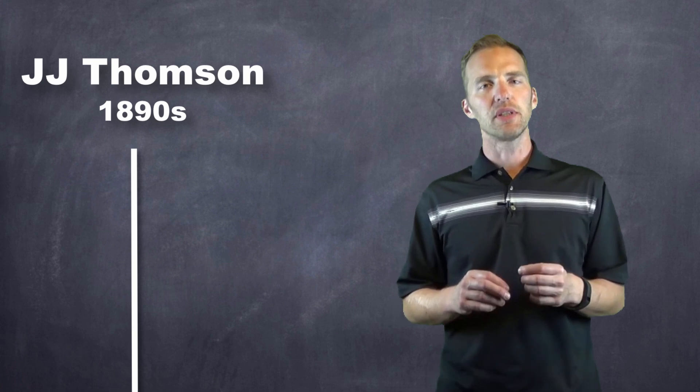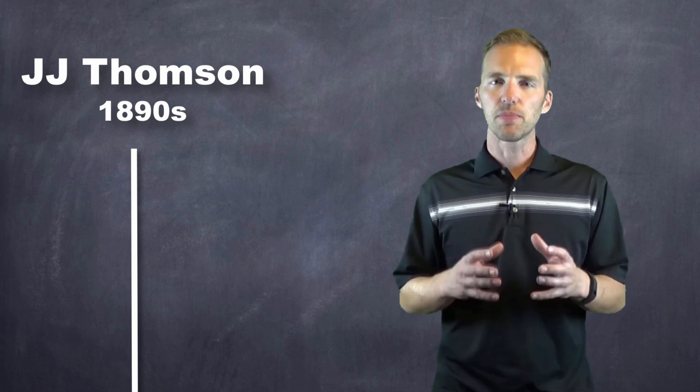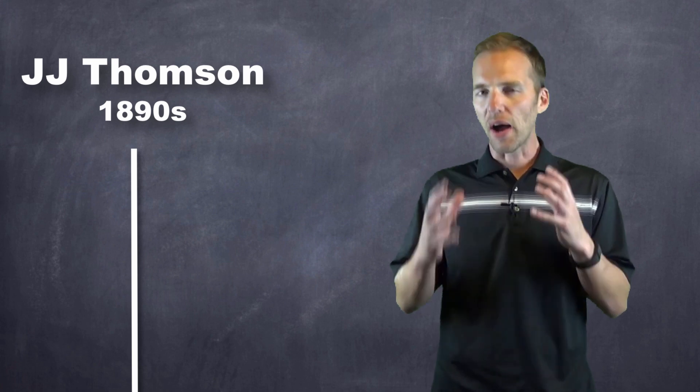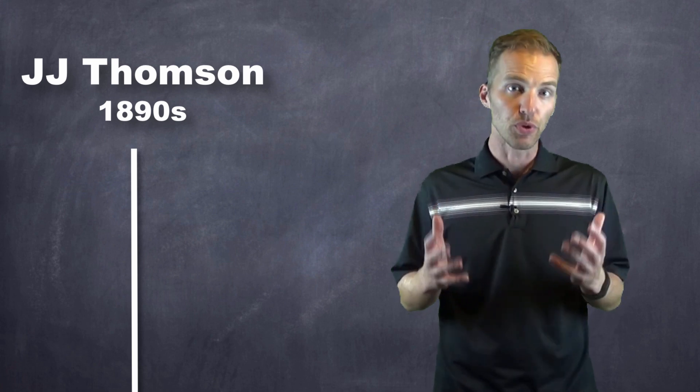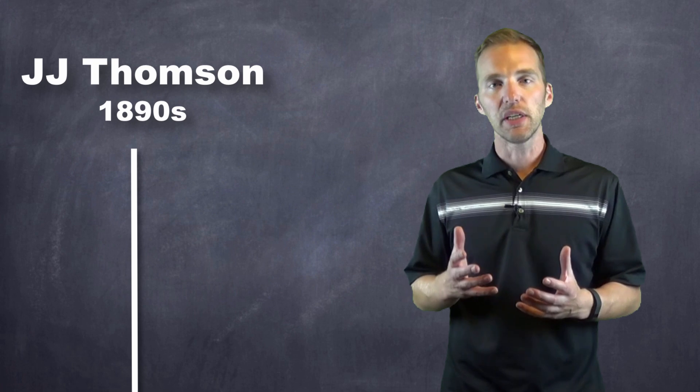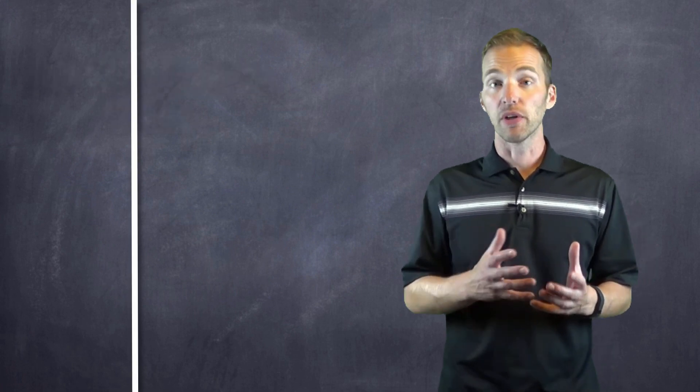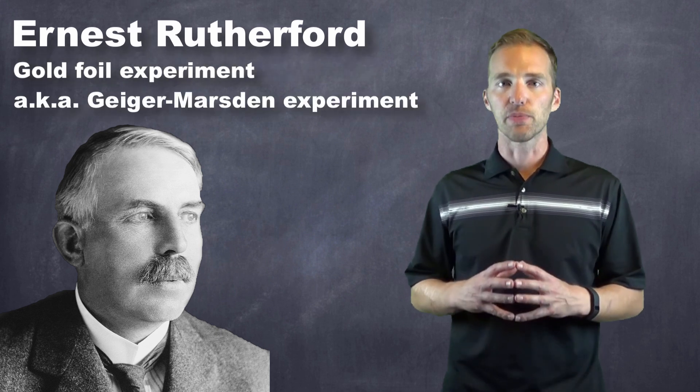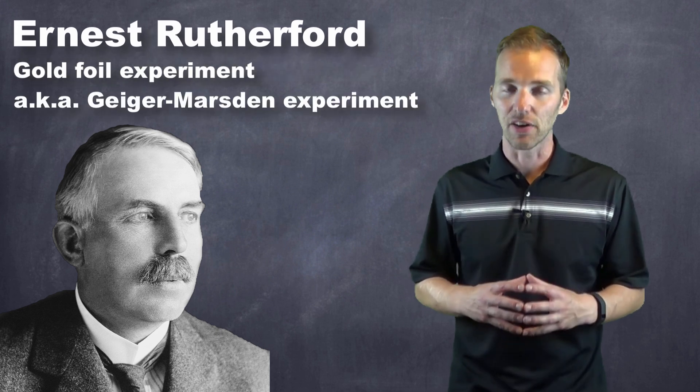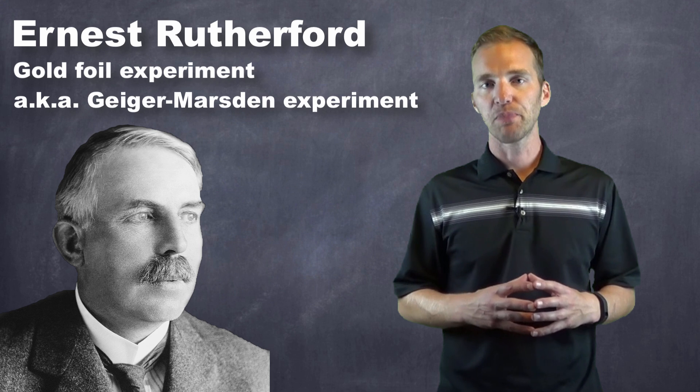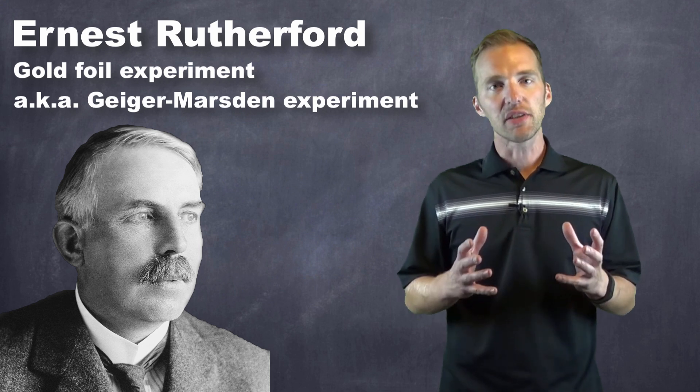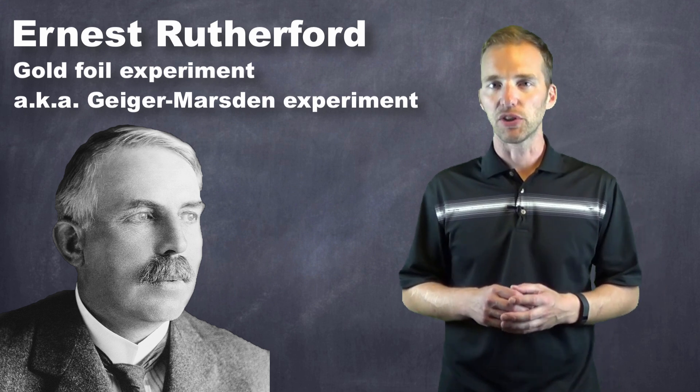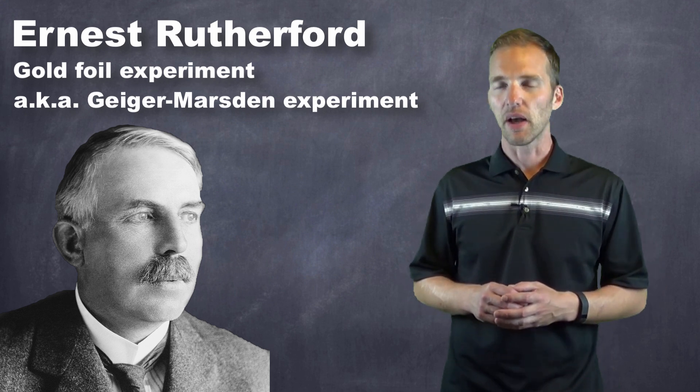It's important to note that while Thompson theorized that there must be some positively charged particle in the atom to offset the negative charges, he never conclusively proved that they were there. That took an individual by the name of Ernest Rutherford and his famous gold foil experiment or Geiger-Marsden experiment. You might recognize the Geiger name from Geiger counter fame.